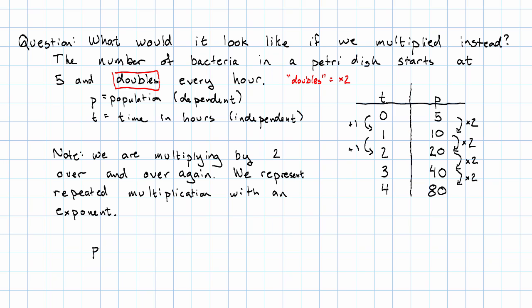How would we represent this? Well, our population will be our starting population. But now, instead of adding to our starting population, we're going to multiply it. Multiply it by what? Well, we're going to multiply it by 2 several times. How many times? A number of times equal to the number of hours that have passed.